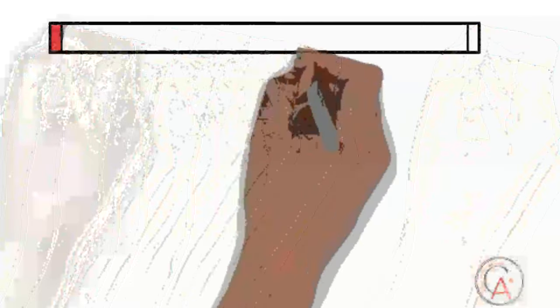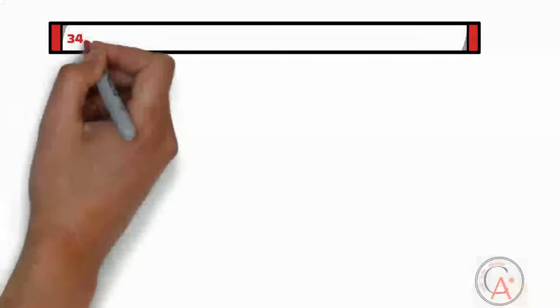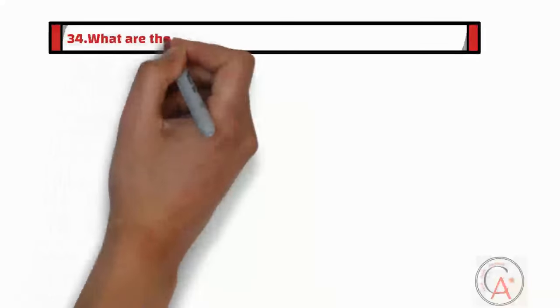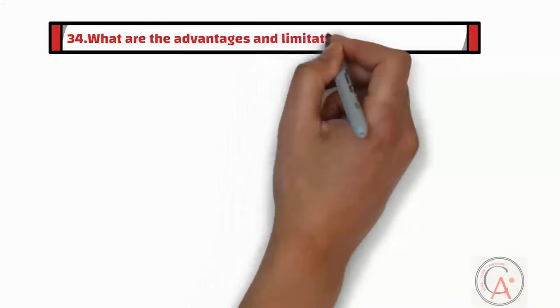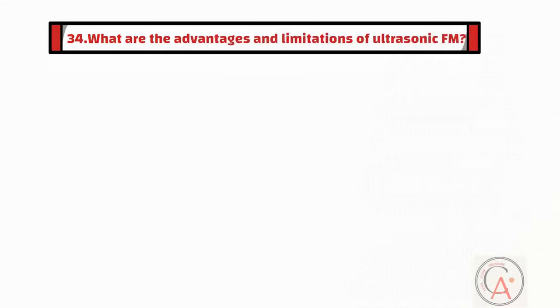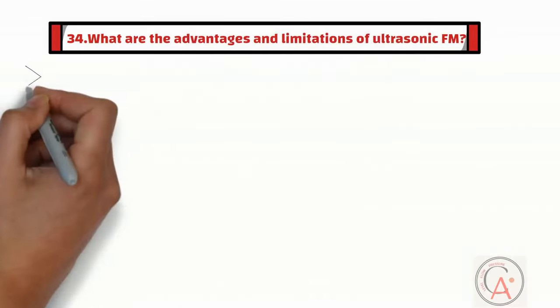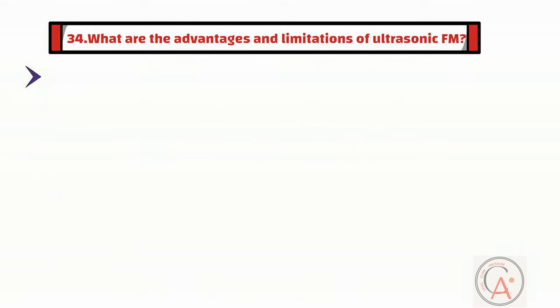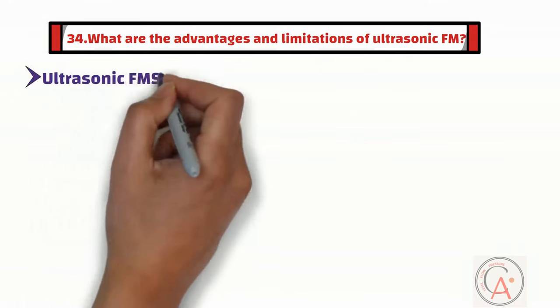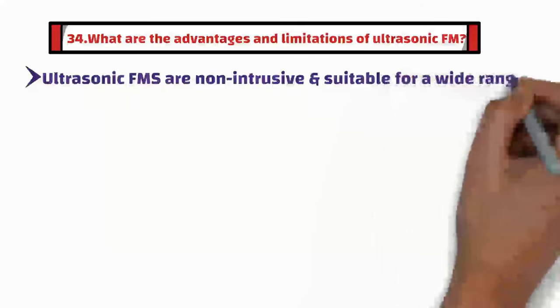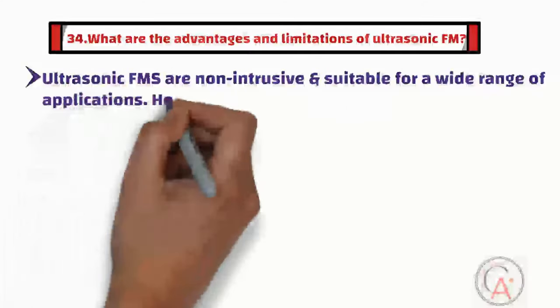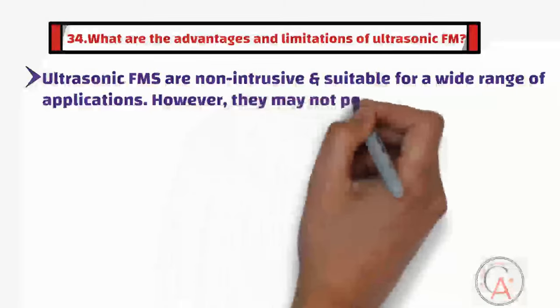The thirty-fourth question is: what are the advantages and limitations of ultrasonic flow meters? Ultrasonic flow meters are non-intrusive and suitable for a wide range of applications. However, they may not perform well with highly viscous or aerated fluids.